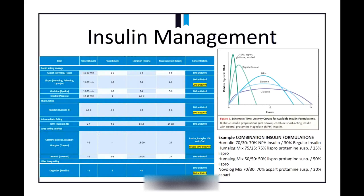Insulin management is a beast of its own. In primary care, it's pretty unlikely you'll be doing a lot of this heavily. The major categories of insulin are rapid-acting like Novolog, shorter-acting like Humulin-R, intermediate, long-acting, and ultra-long-acting. You've probably heard of basal insulins like Lantus, Tresiba, and Levemir. There are also some combination insulins that might have an intermediate with a short-acting or a long-acting with a short-acting. This is really beyond what you'll probably be doing in primary care, but I wanted to put it out there for awareness.